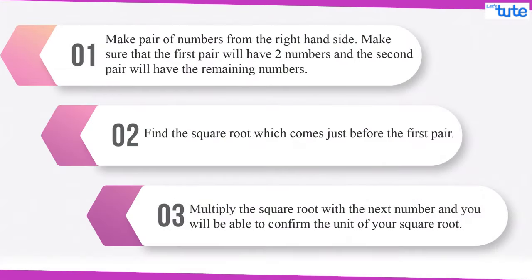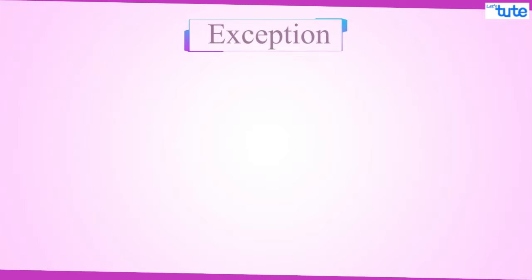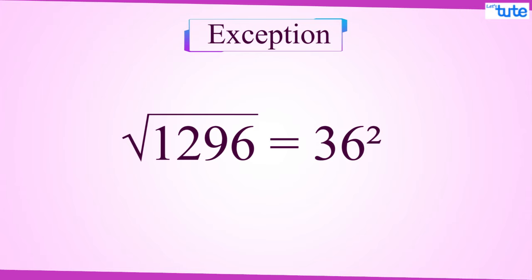So friends you can see that we can find the square root of any perfect square number in just 3 steps which hardly will take 3 seconds or 5 seconds. But there is an exception. This trick does not work with square root of 1296 which is the square of 36. So just remember that square root of 1296 is 36 and not 34. And for rest of any numbers this trick will work.